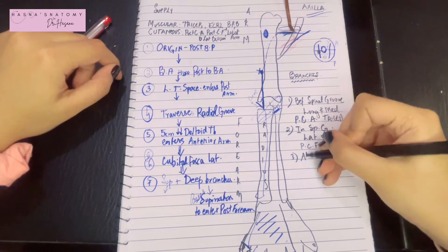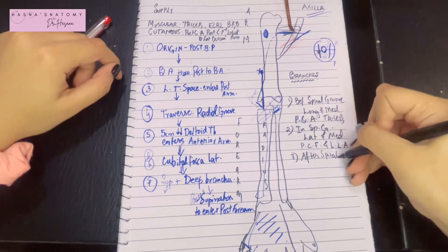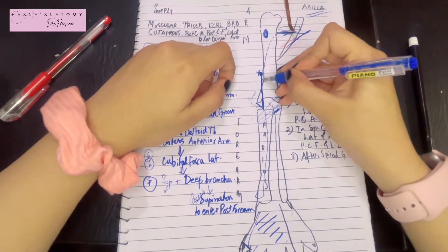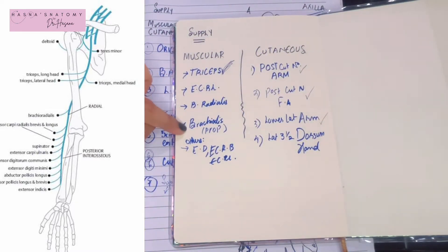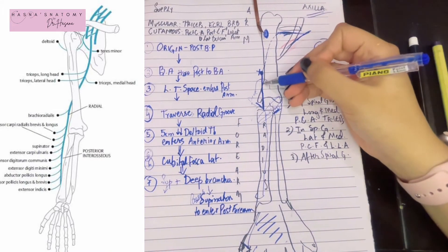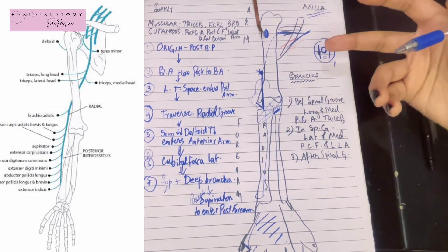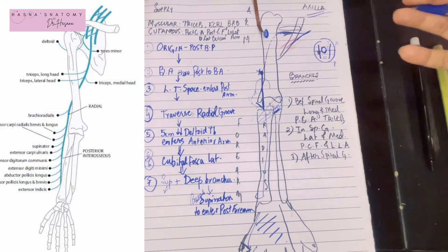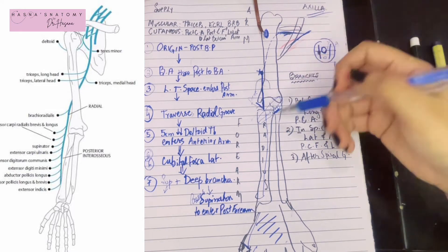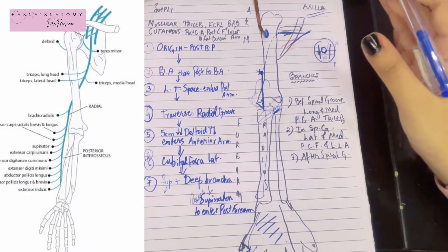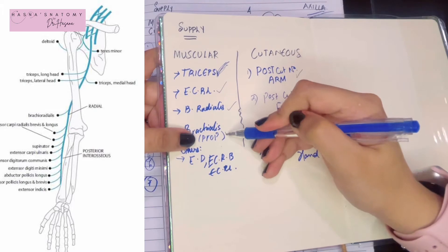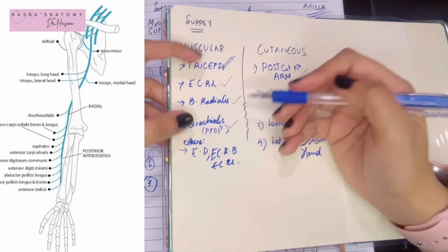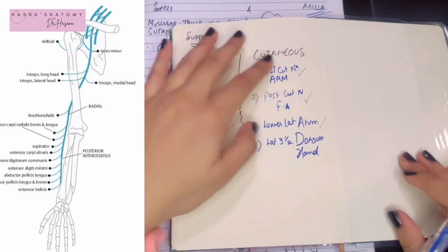After the spiral groove, the radial nerve gives branches that supply the brachialis (proprioceptive fibers), the brachioradialis, and the extensor carpi radialis longus. So in the lower lateral side of the arm, after the spiral groove, the radial nerve supplies these extensor muscles of the forearm directly. The remaining extensor muscles of the forearm are supplied via the deep branch of the radial nerve — remember that distinction.